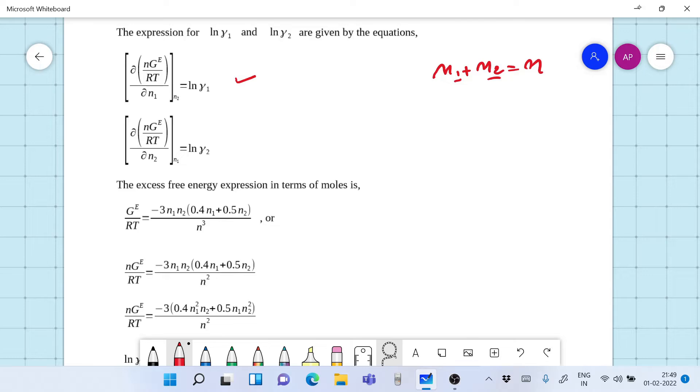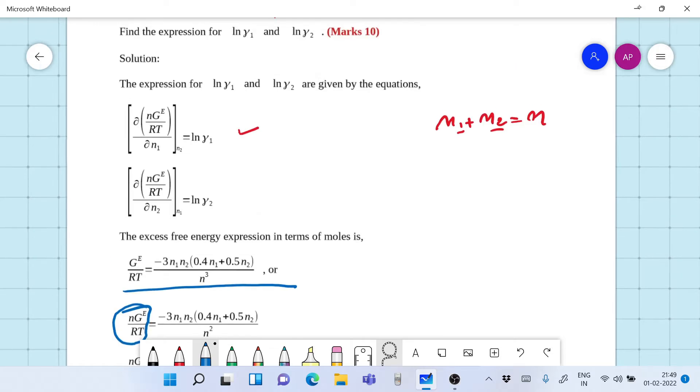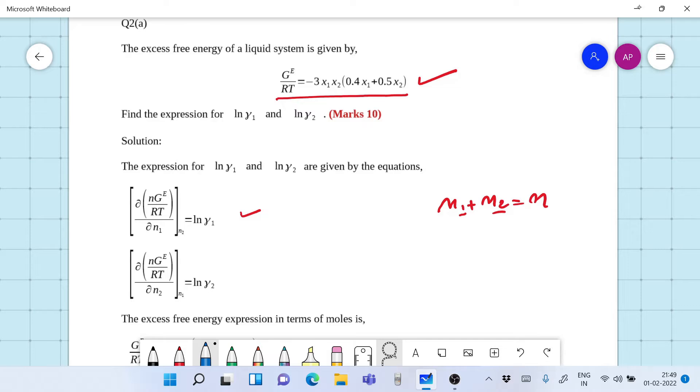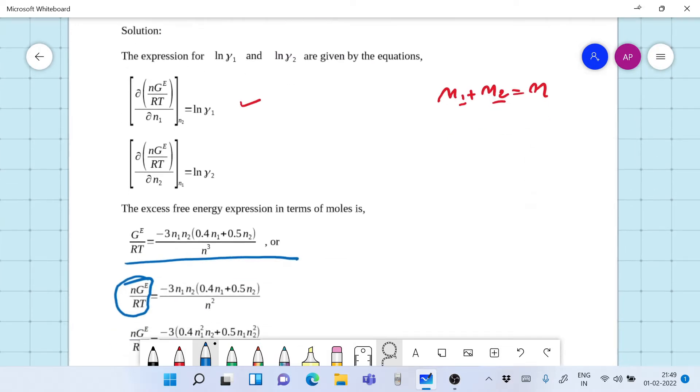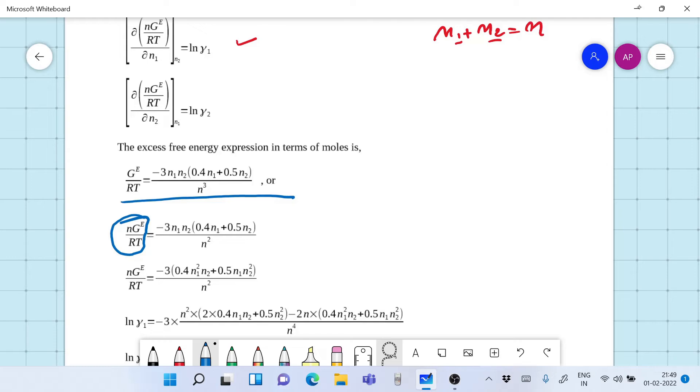So writing this in terms of n1 and n2 gives you this expression where you get n cubed in the denominator. Now from this n cubed take a n to the LHS and write n squared.